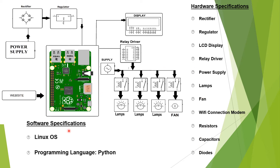The software specification is that Raspberry Pi uses the Debian Raspbian platform, that is, through the Linux operating system with the programming language Python. Now let's move over to the program.